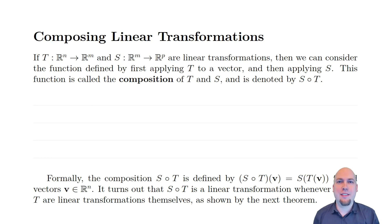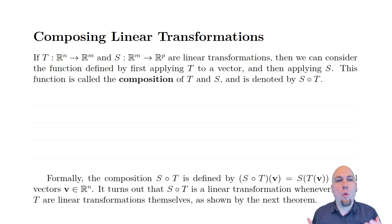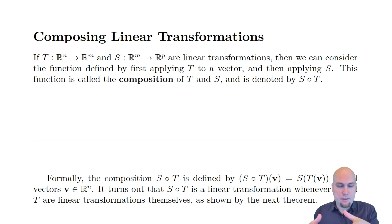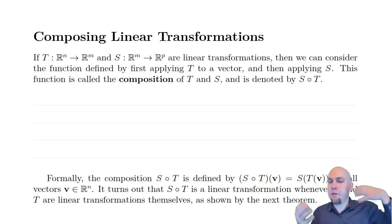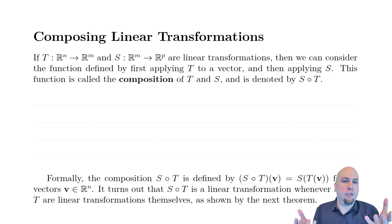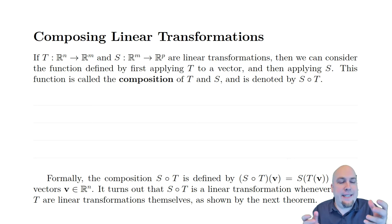Hey folks, my name is Nathan Johnston and welcome to lecture 16 of Introductory Linear Algebra. Today we're going to answer the question of what happens if you apply two or more linear transformations one after another. So you start off with some vectors in n-dimensional space, apply a linear transformation, and then apply another one. What is the total net effect of applying those multiple linear transformations in sequence like this?